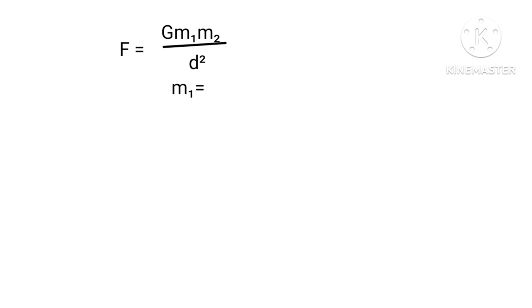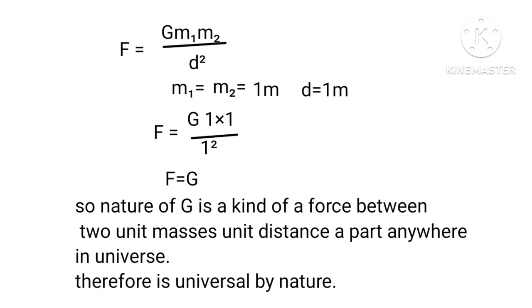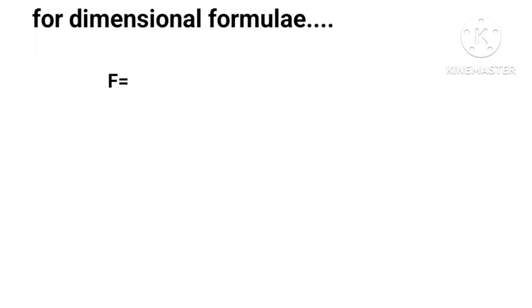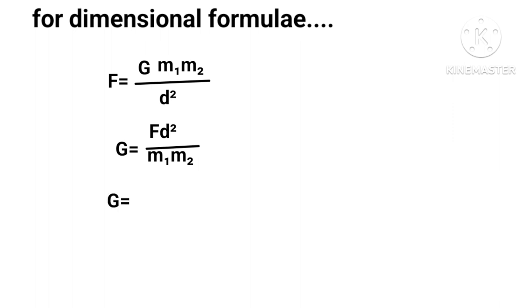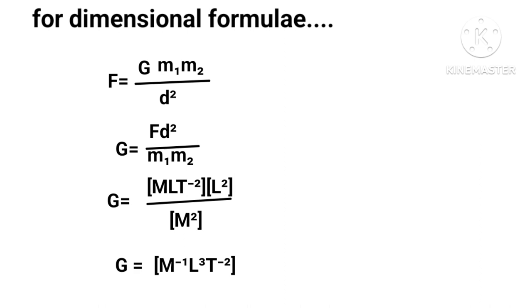To find the SI unit and dimensional formula of G: from F equals G times m1 times m2 upon d squared, we get G equals F times d squared upon m1 times m2. Putting in the dimensions of each quantity: G equals m times L times T to the minus 2, times L squared, upon m squared. Therefore, the dimensional formula of G is M to the minus 1, L cubed, T to the minus 2.